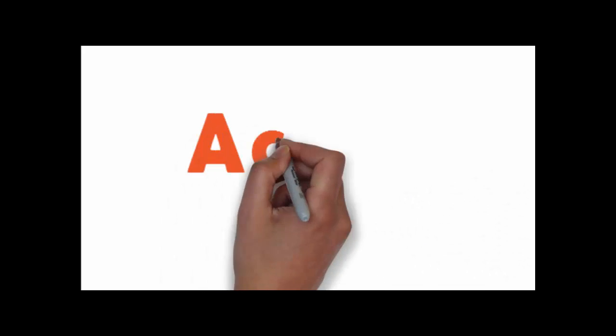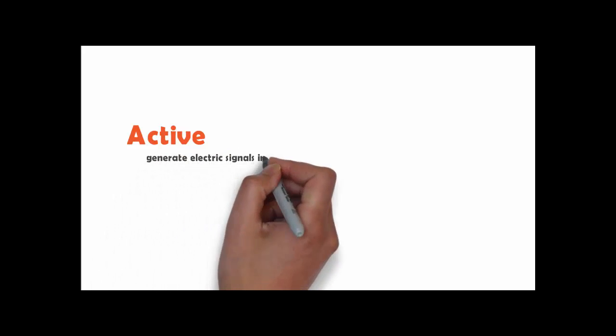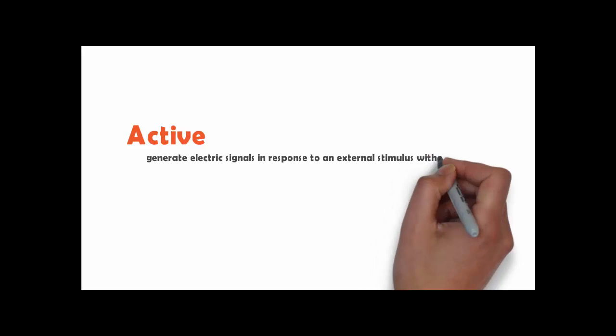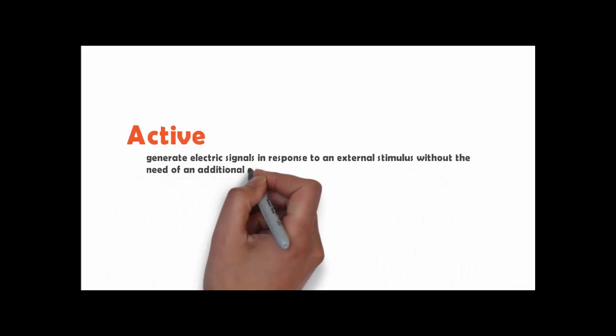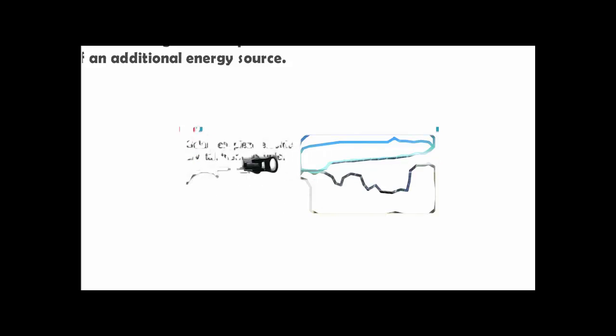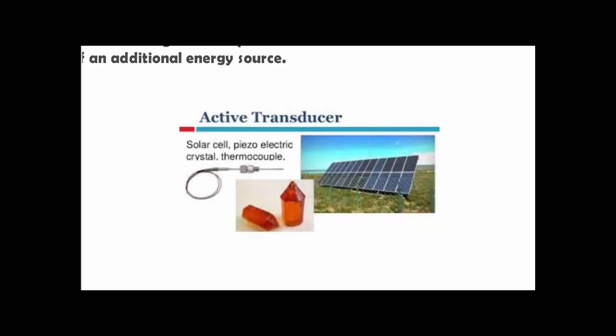Moving on to active transducers — they generate electrical signals in response to an external stimulus without the need for an additional energy source. Examples include photodiodes and thermocouples. Here are some images of active transducers.